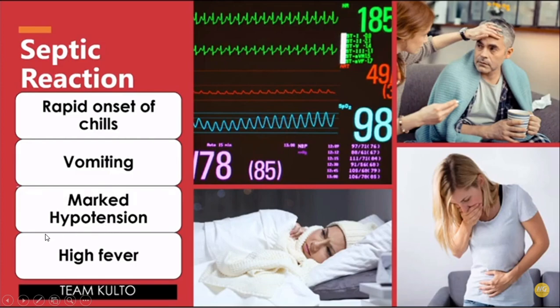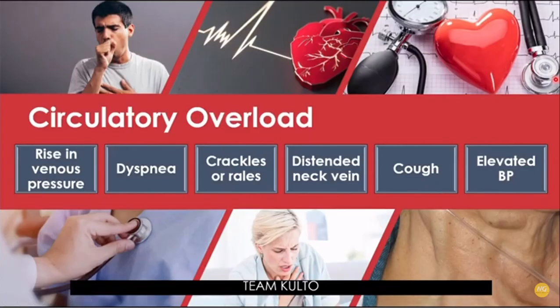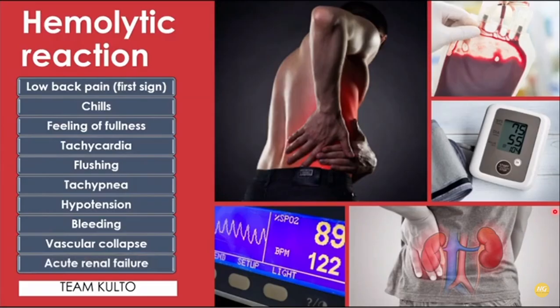Next we have circulatory overload. This is caused by administration of blood volume at a rate greater than the circulatory system can accommodate — that's why it is important to regulate our blood pressure. The things to assess are: rise in venous pressure, distended neck veins, cough, and elevated blood pressure.